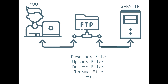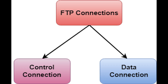FTP runs on top of TCP, like HTTP. To transfer a file, two TCP connections are used by FTP in parallel: a control connection and a data connection. By default, FTP operates on ports 20 and 21. Port 21 is used for the control connection, which carries control information such as user identification, passwords, and commands to change directories, retrieve, or store files. Port 20 is used for the data connection, which carries the actual file data.